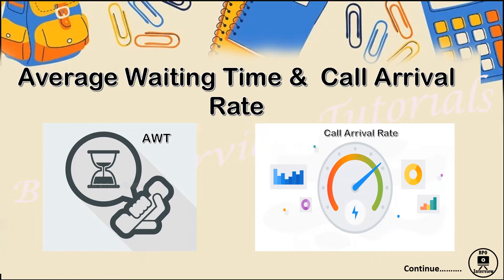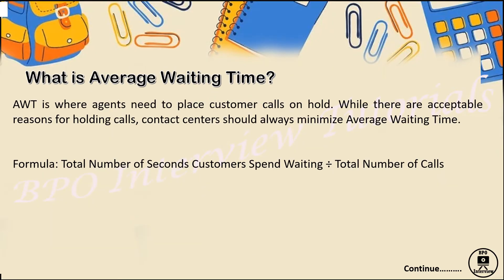Let's start with the first concept: average waiting time. Basically, average waiting time is when a customer calls the agent and the agent places the call on hold. Hold is acceptable, but there are policies that need to be followed. Various companies have a policy that the agent is only allowed to keep a call on hold for 30 seconds, after which they need to refresh the call and ask the customer if they require more time to research the details.